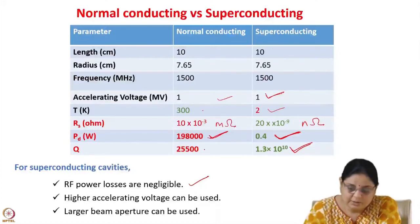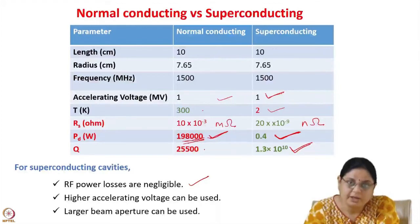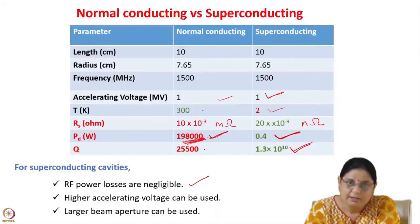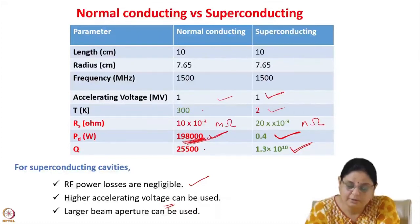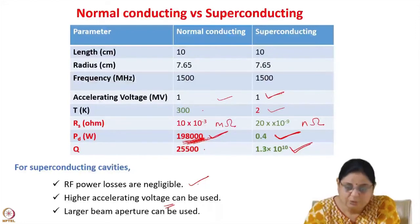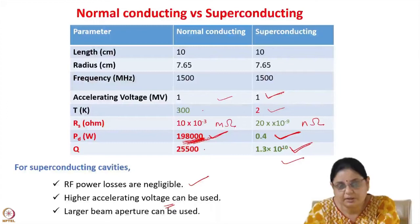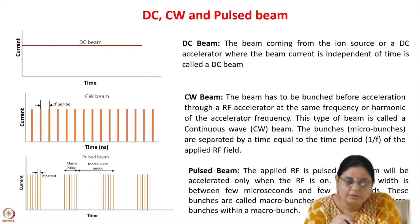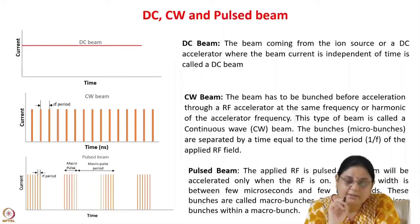This is a big advantage — you are able to utilize most of the RF power in the case of a superconducting cavity. Also, since the power dissipated is very high in a normal conducting cavity, you cannot go to very high accelerating voltages, because how high an accelerating voltage you can use depends on how much power you can remove from the cavity. Larger beam aperture can be used in the case of superconducting cavities because they need not be optimized for higher shunt impedance. Superconducting cavities are particularly useful for accelerating CW beams.